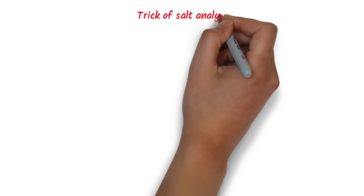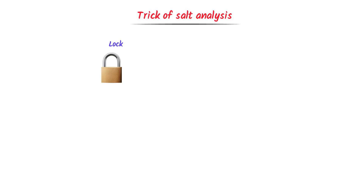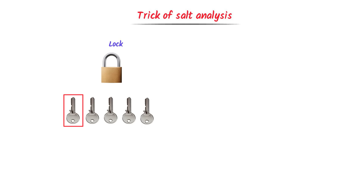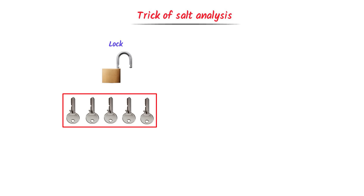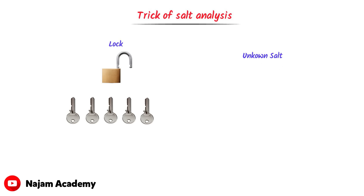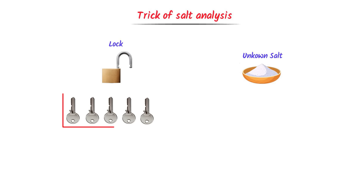Now let me teach you my personal trick of salt analysis. Consider a lock — there are five keys available to open it. I will select the first key; if it doesn't open the lock, I will select the second key, then the third, fourth, and fifth key. There is a 100% possibility that one of these five keys will unlock the lock. Similarly, consider an unknown salt. I will use five keys to open or unlock the anion part of any salt.